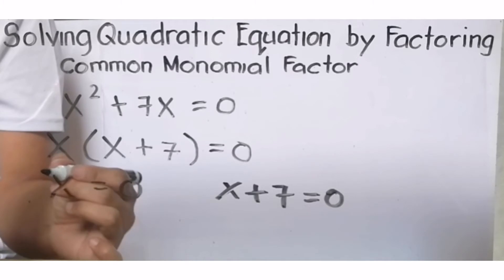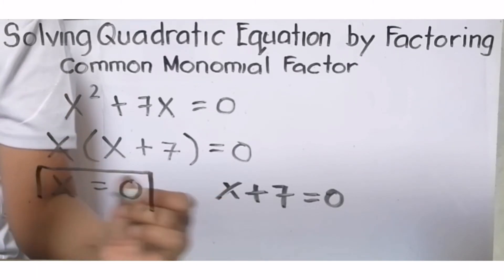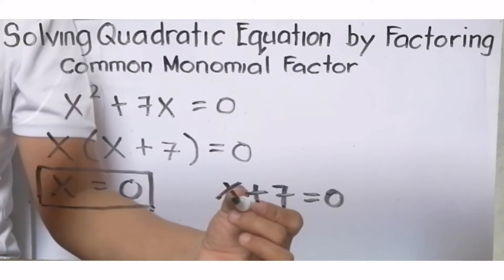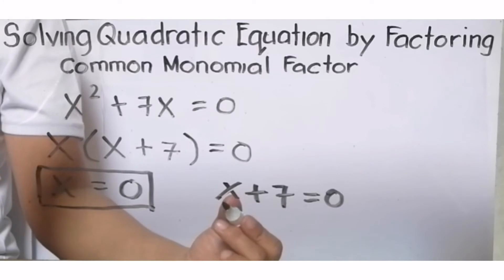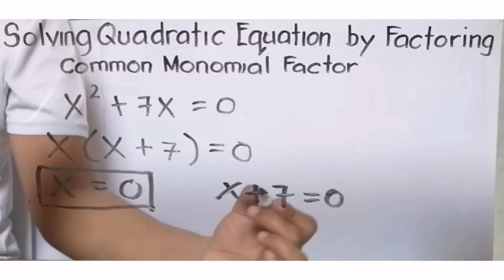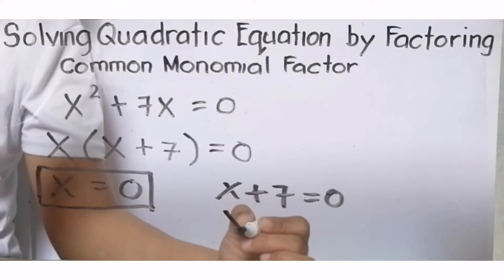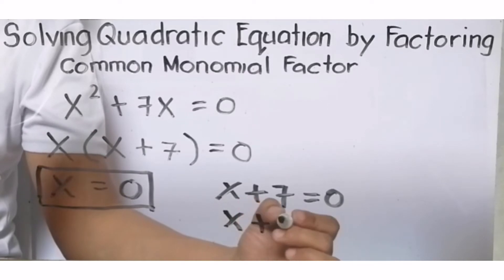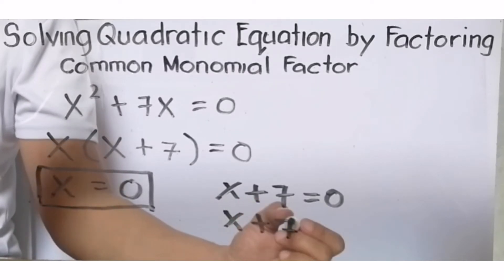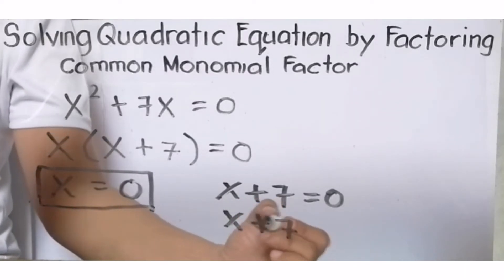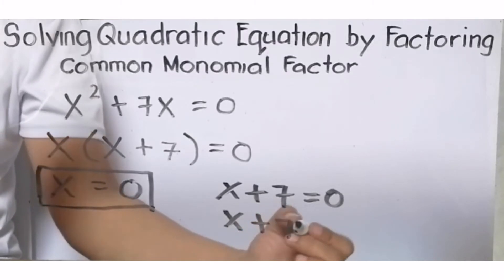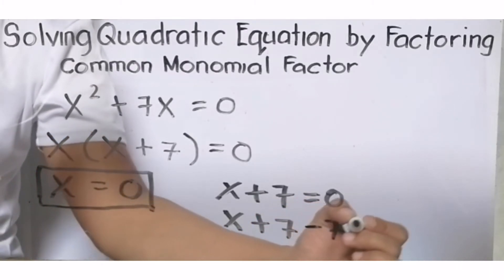Ngayon, x = 0 na to, ito na ang isa sa ating mga solution. Next, by additive inverse or by addition property of equality, kailangan natin matanggal si plus 7 dito sa ating left side of the equation. X + 7, para maging 0 ito, mag-add tayo ng kanyang inverse. The inverse is -7.